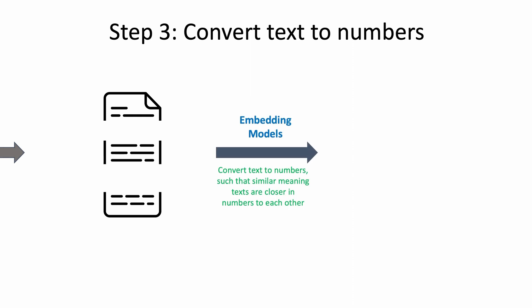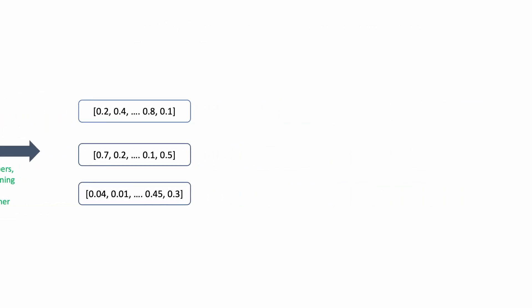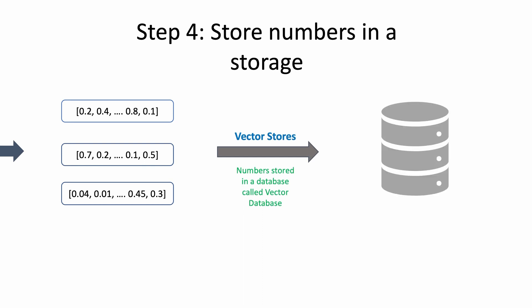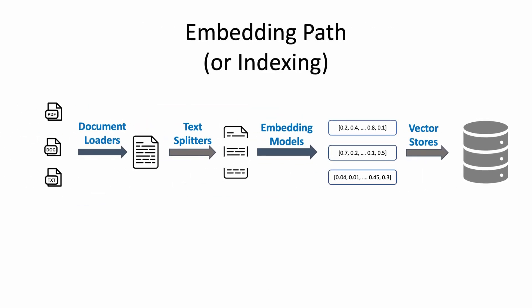Now the next step is to take these chunks of text and convert it to numbers using something called embedding models. The way these embedding models work is that they take the text and assign it a number based on their meaning. So words and sentences which are similar in meaning are closer to each other in the numbers that are assigned. The next step is to store these numbers in a storage called vector stores or vector databases so that we can later retrieve them. Now this completes the embedding path or indexing of these documents.